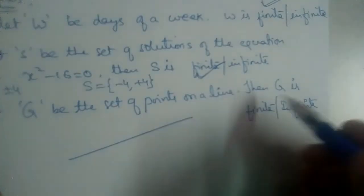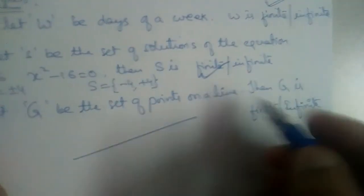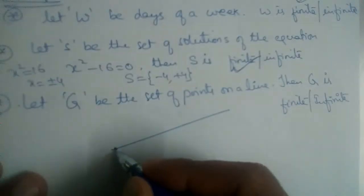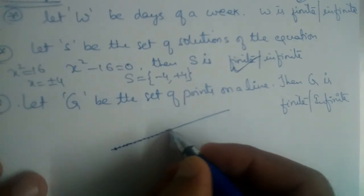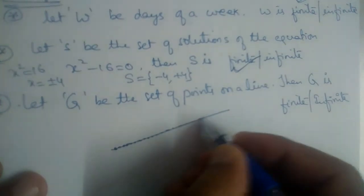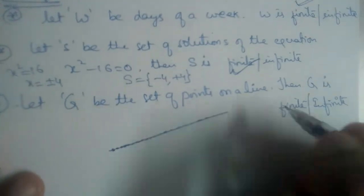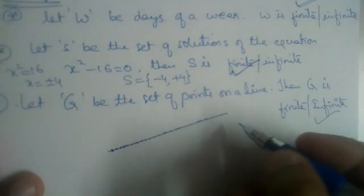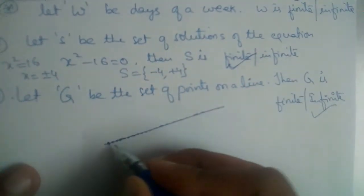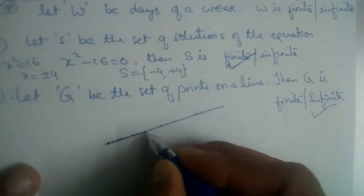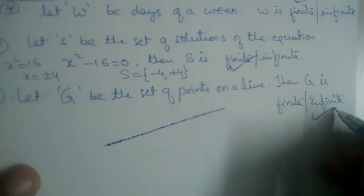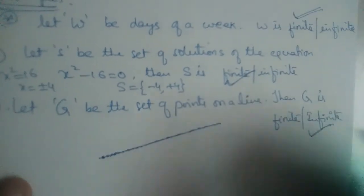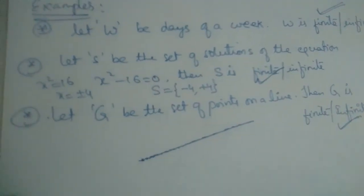Third example: let G be the set of points on a line. How many points are there on a line? There are infinitely many points — in fact, when you join infinite points you get a line. So G is an infinite set.